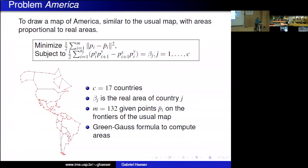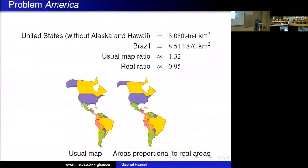This is the problem: we want to minimize the displacement of points subject to area constraints. On the usual Mercator map, the continental United States appears about 30% larger than Brazil, when in reality it is about 5% smaller. This solution produces a map of America with proportional areas.